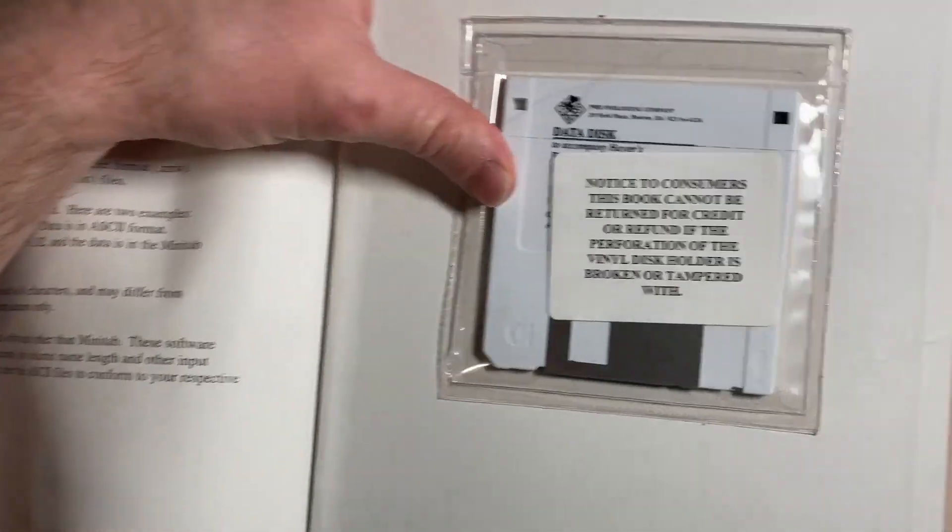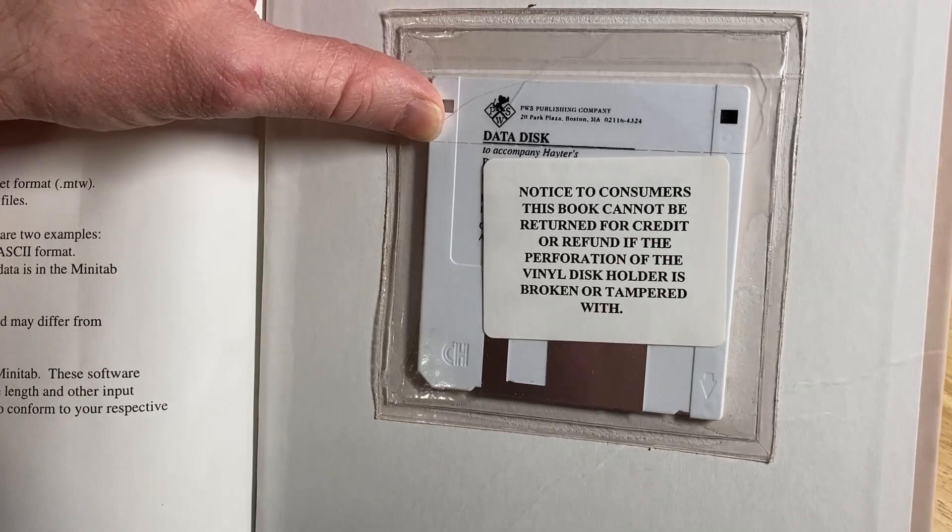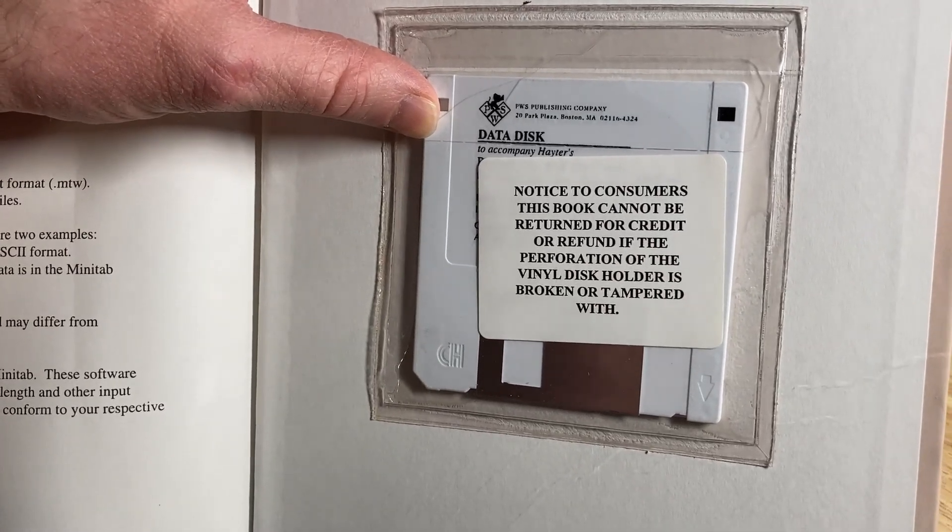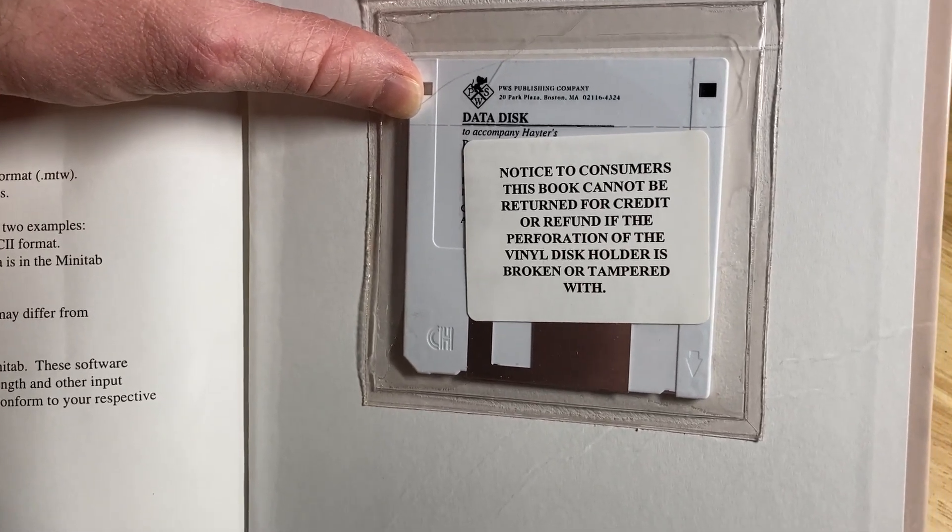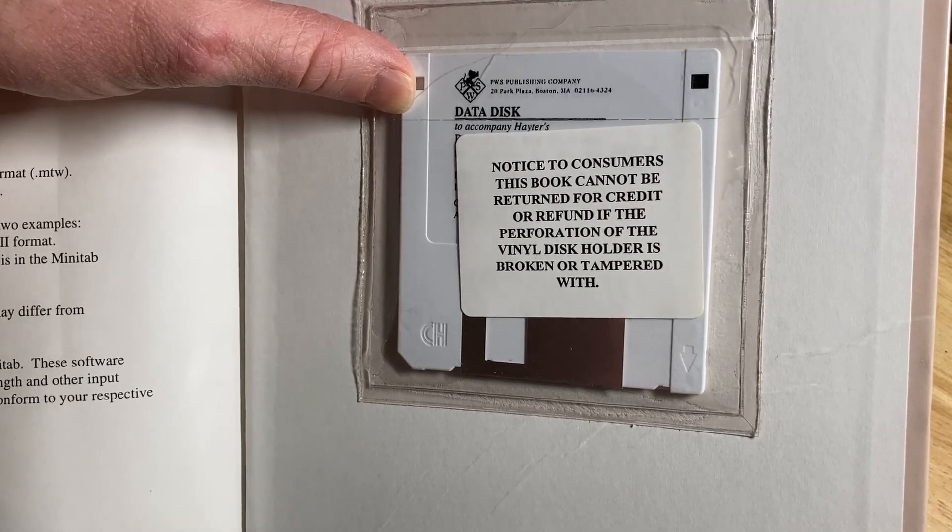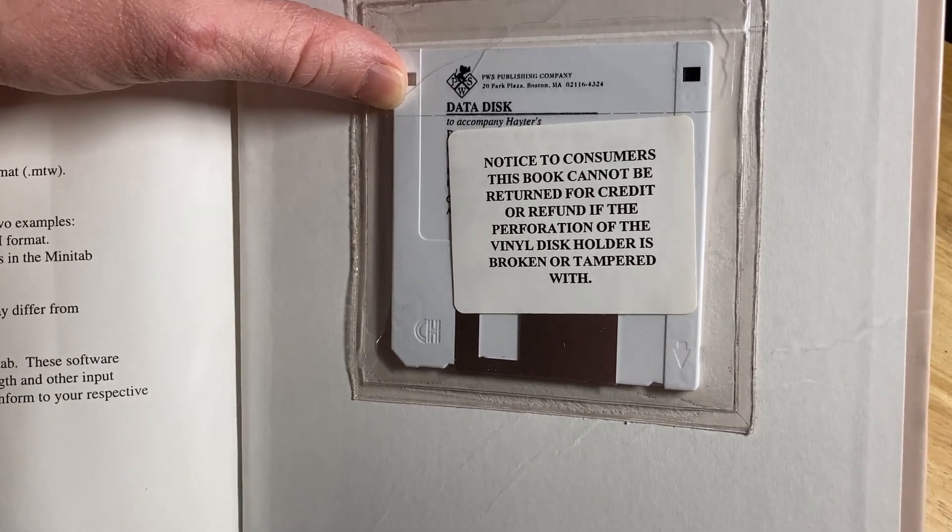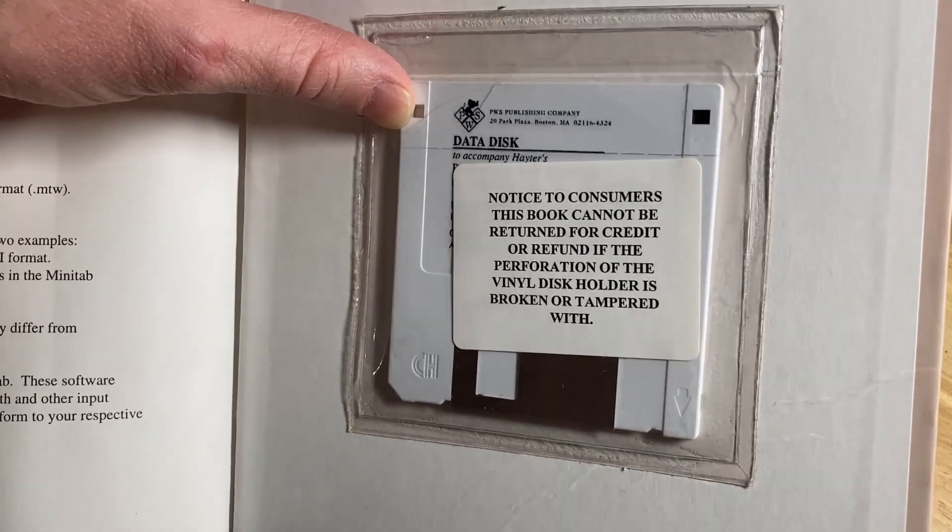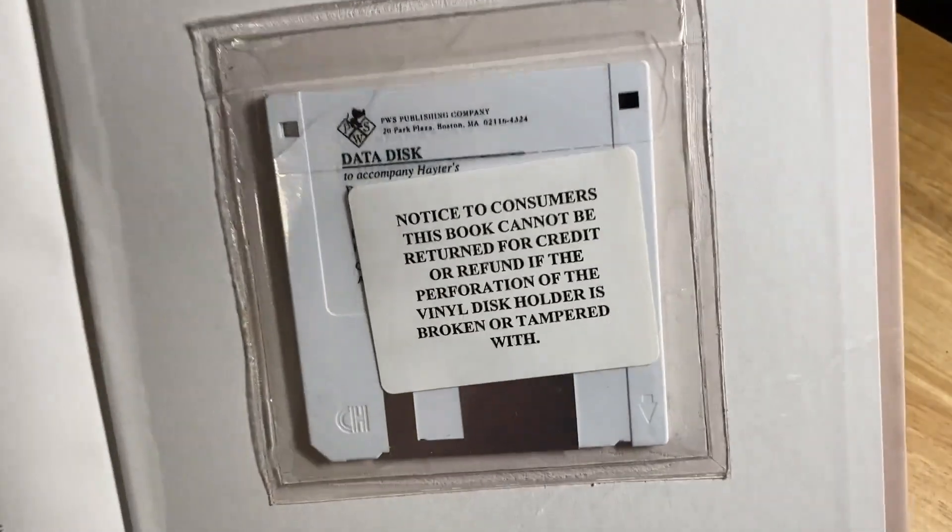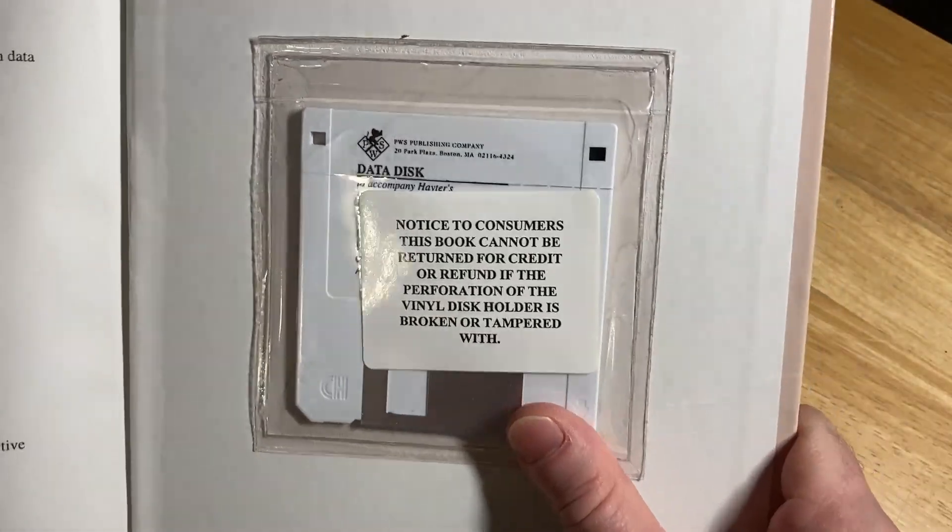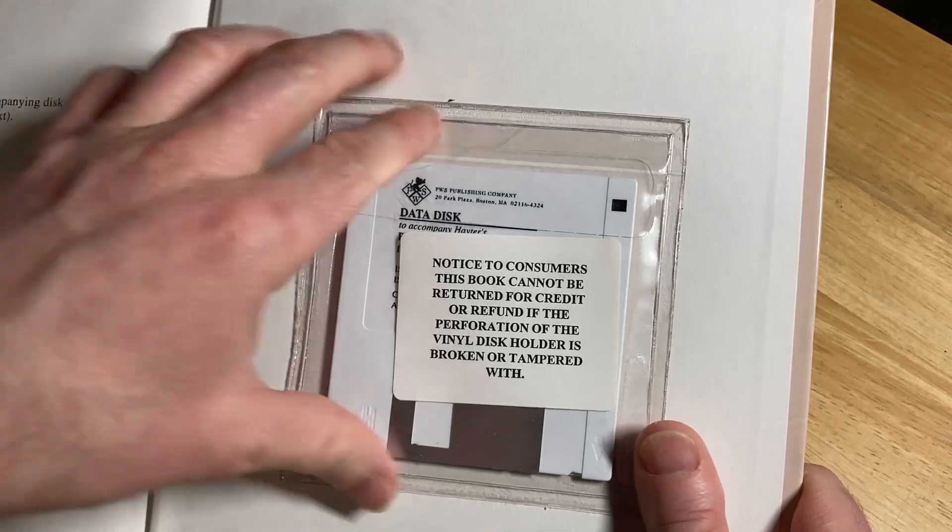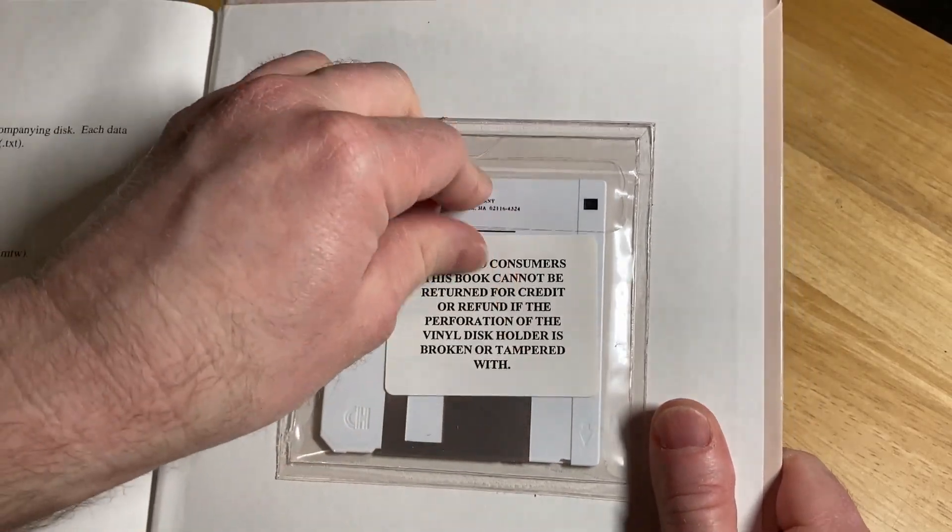What's this? Look at this, it comes with a floppy drive. Notice to consumers, this book cannot be returned for credit or refund if the perforation of the vinyl disc holder is broken or tampered with. This is really cool, this is old school. This book actually comes with a floppy disk. How cool is this?